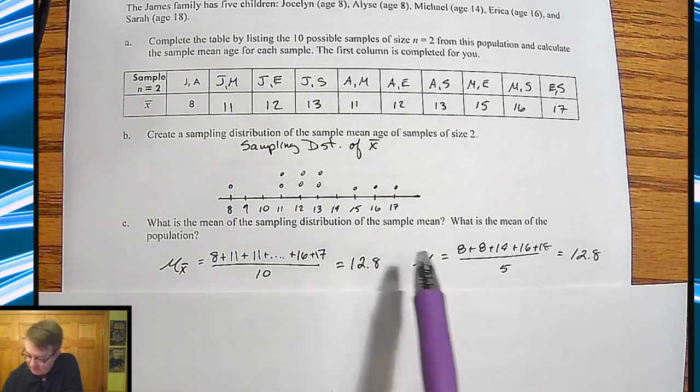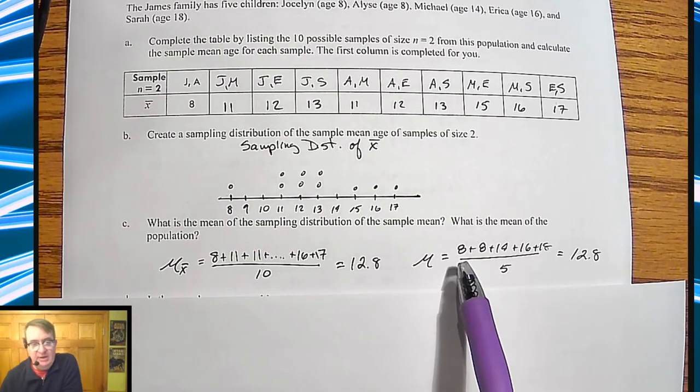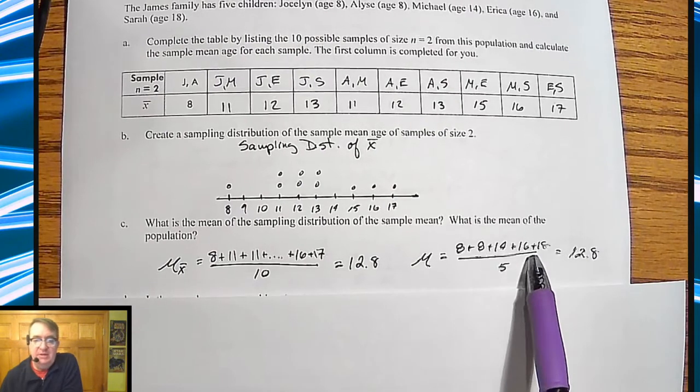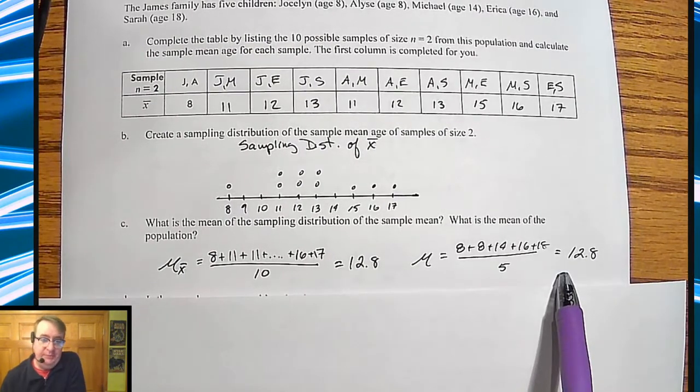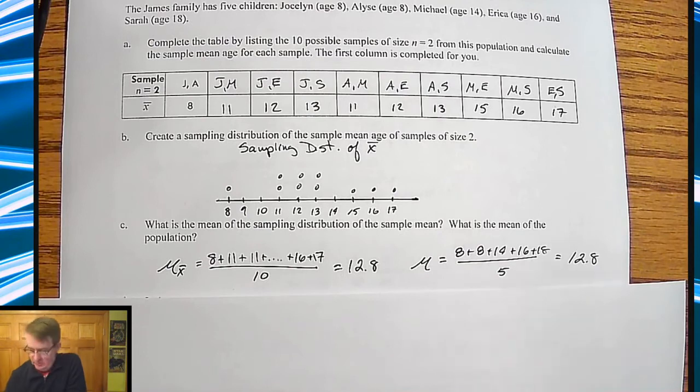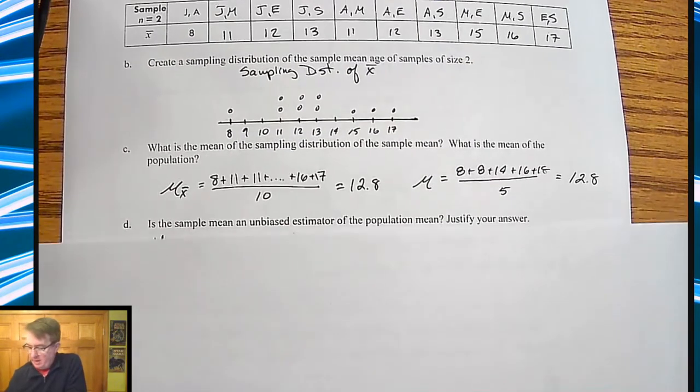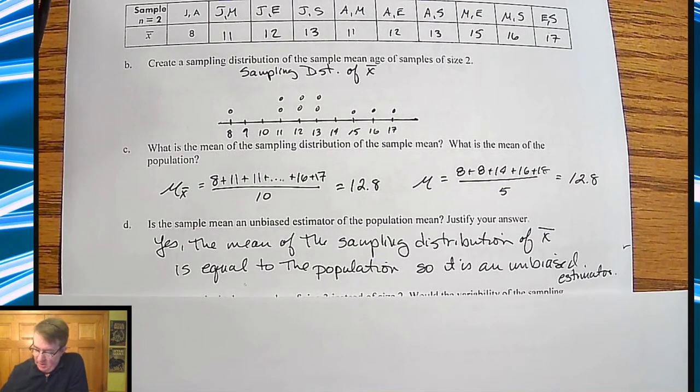It says, what's the mean of the population? So if I add up the actual ages of the kids, the 8, the 8, the 14, the 16, 18, I also get 12.8. Ooh, that seems nice. It's always going to be that nice, Mr. Hayes. Probably not, honestly.